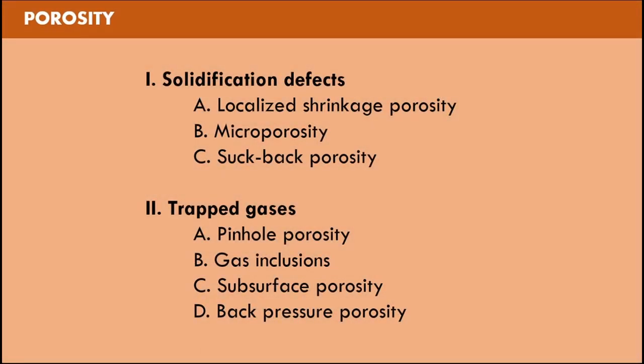Porosity occurs both within the interior region of the casting or on the external surface of the casting. Porosity results in surface roughness while internal porosity weakens the casting. Porosity can be minimized by the use of proper techniques. Porosities can be broadly divided into two groups: the solidification defects and the trapped gases leading to porosities.